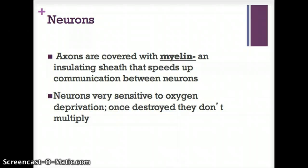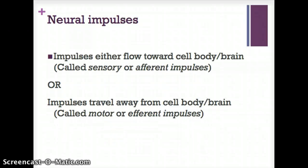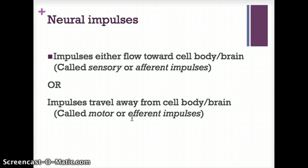Neurons are really sensitive to oxygen deprivation — once they have a lack of oxygen, they die and they don't multiply. Neural impulses either flow towards the cell body and the brain — these are called sensory or afferent impulses. For example, if you touch something hot, that sensory information goes up to your brain. Or impulses travel away from the cell body — these are called motor or efferent impulses. I think of efferent as 'exiting' the body. So if you want to move your arm, that impulse is sent out of the brain to the muscles.